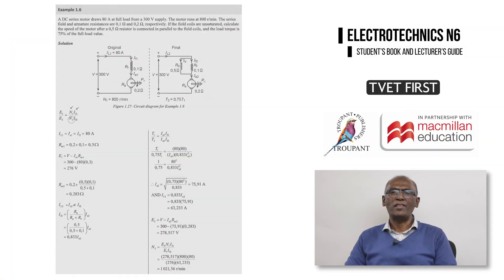Formula boxes show which formula should be used in different situations and the variables are defined in detail. Speed control of DC motors is a challenging part of the Electrotechnics for both N5 and N6. This section has not changed very much. TVET First makes this topic easier by using numerous worked examples of speed control to explain the concepts. The worked examples are based on exam-type questions.